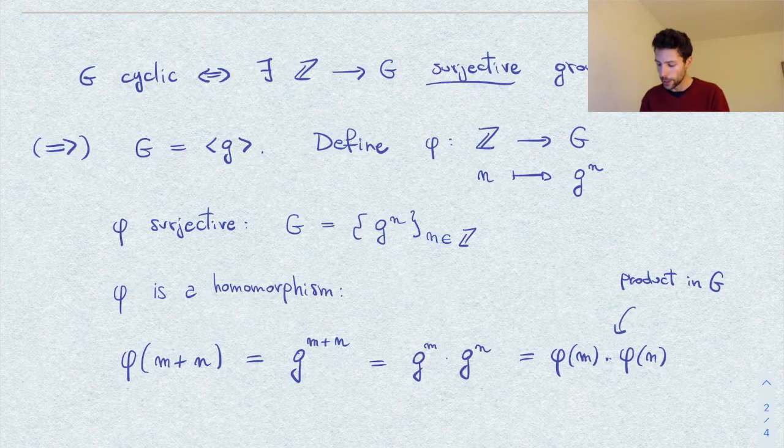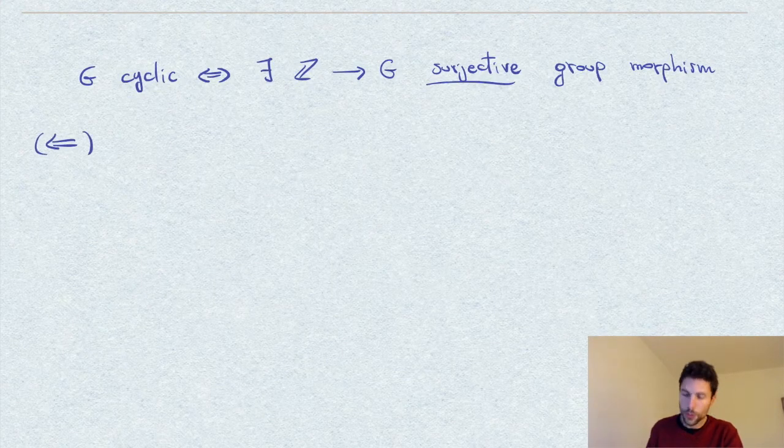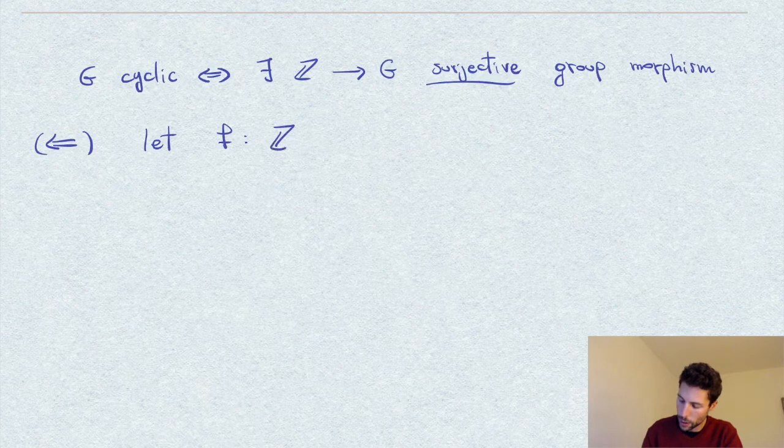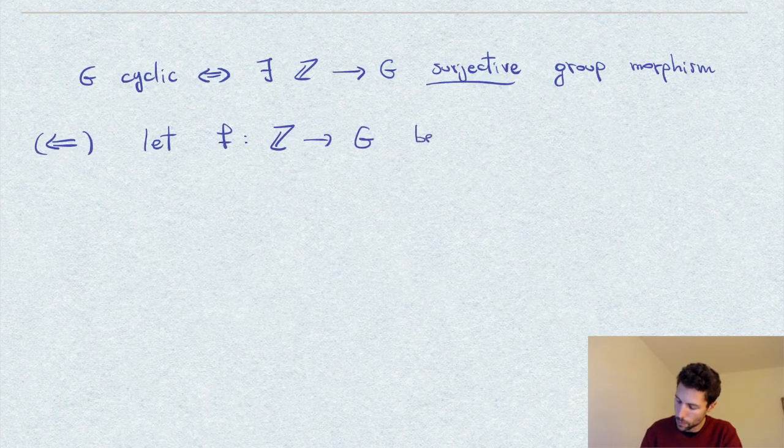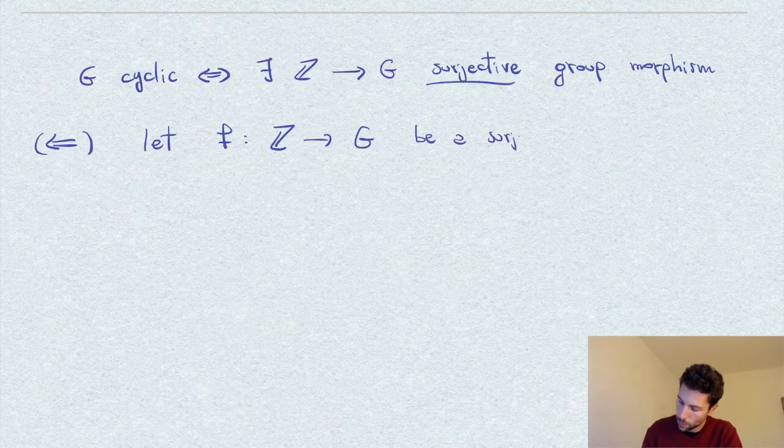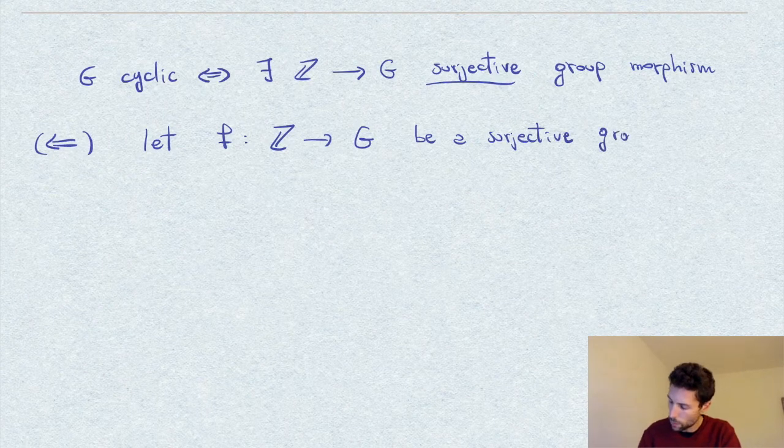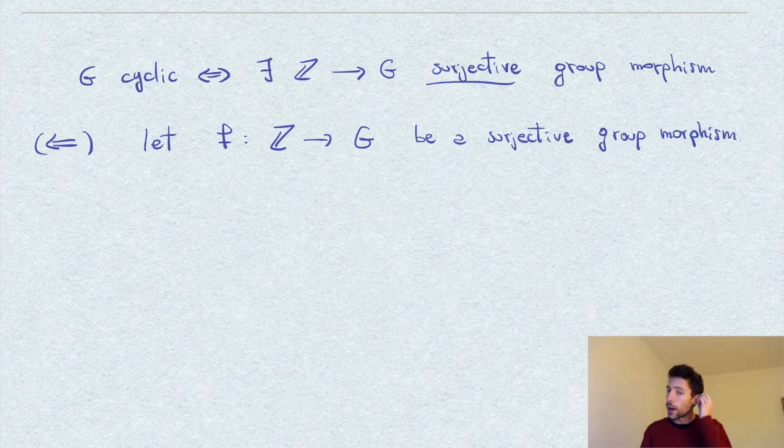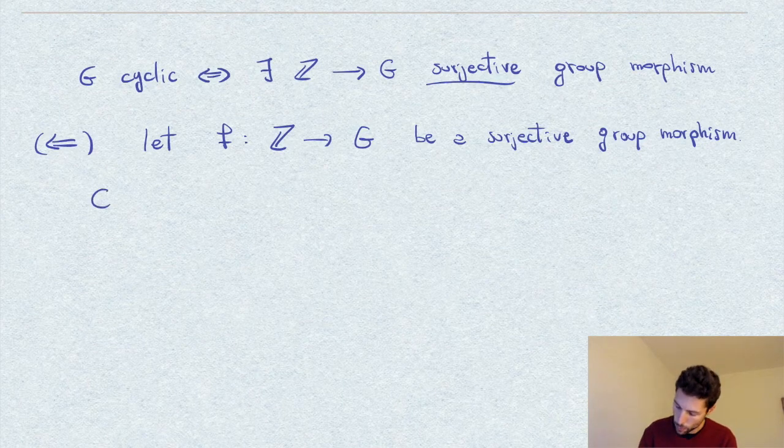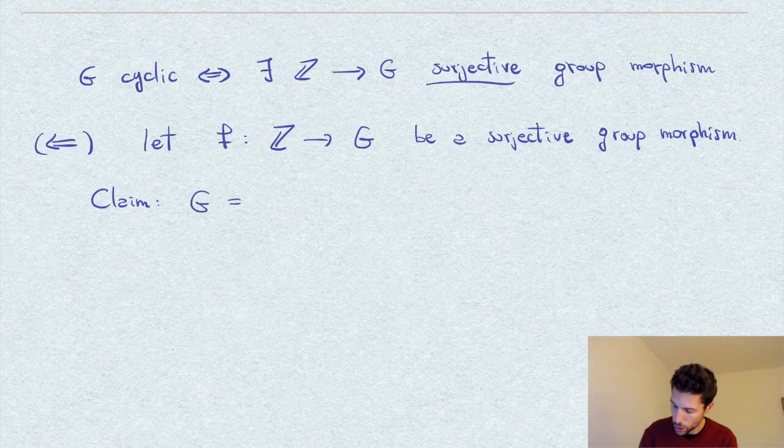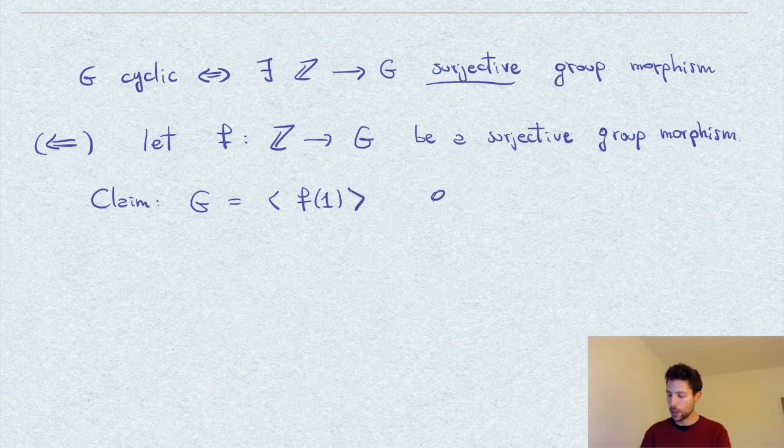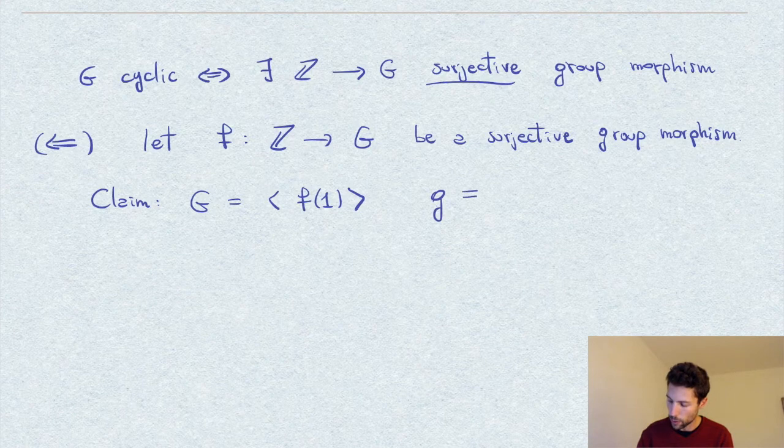Let's move on and prove the other part. So in other words, we have, we are given, say, f, I will call it f, is such a morphism. Now I claim that our group G is generated by the element f of one. Okay, so let me give a name to this element, for simplicity, and we'll just call it g.